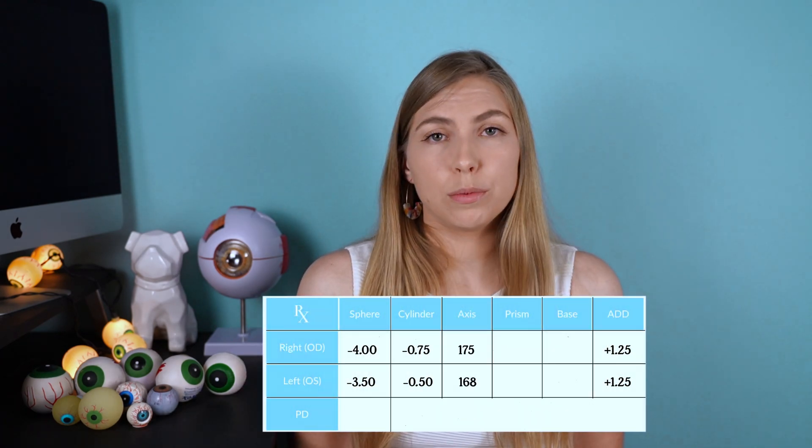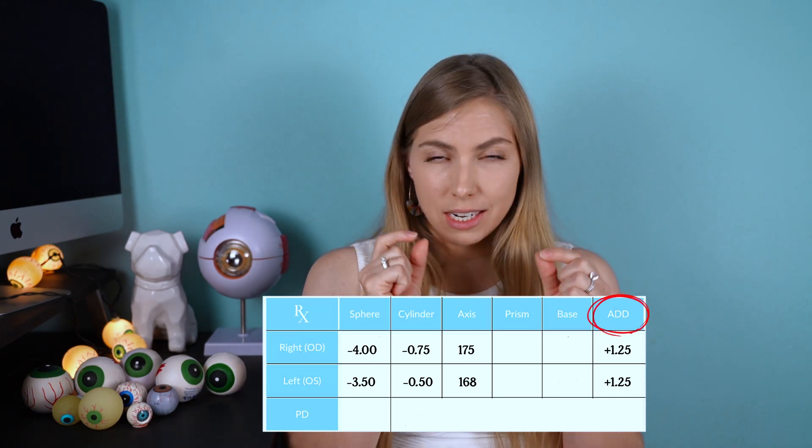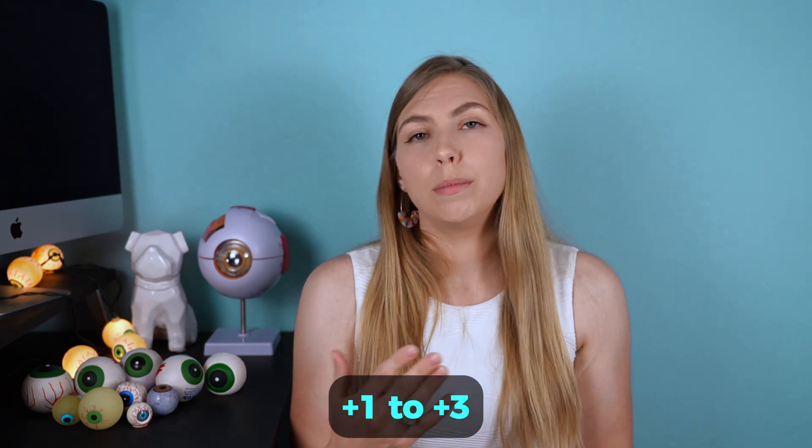Another number you'll see on the prescription is labeled as ADD, and this is the power needed in the glasses to help someone see up close. If someone's distance vision is properly corrected, the ADD power needed is going to be the same in both eyes. These ADD powers usually range from plus one to plus three, and things can really vary depending on people's working distance — the closer you hold things, the higher this number is going to be; the further away, the lower.